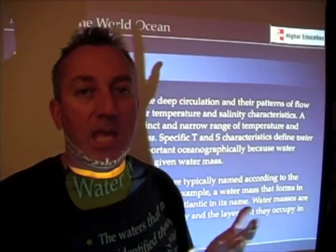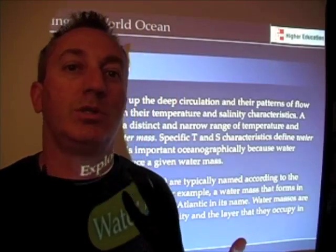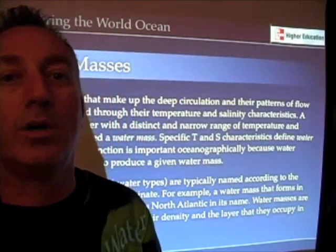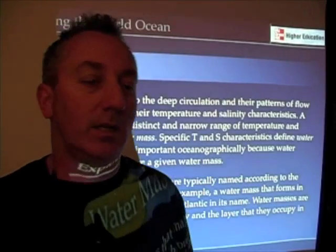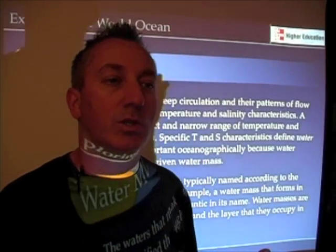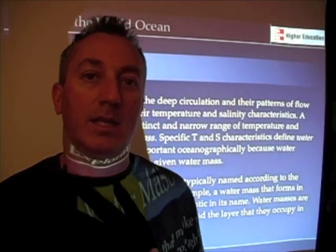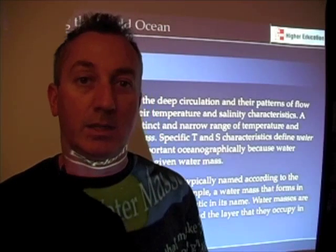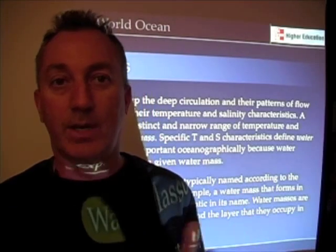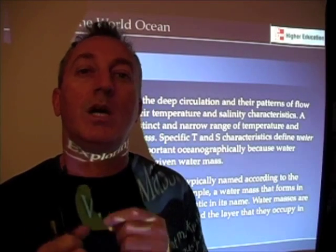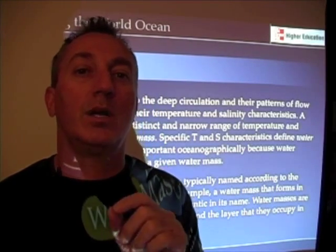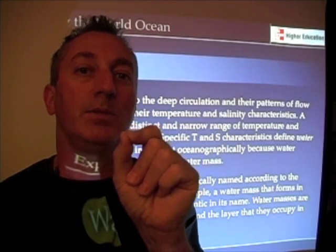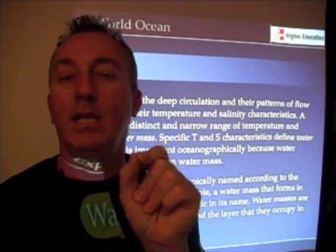Water masses may be composed of water types. You don't hear water types too much in oceanographic literature — you don't find it in textbooks that much. But when we talk about a water type, we're talking about a very specific single temperature and single salinity.